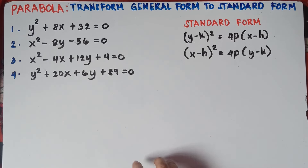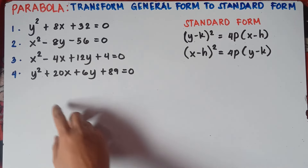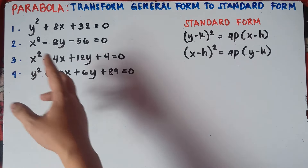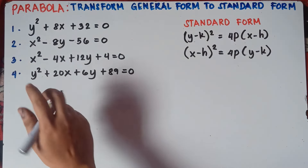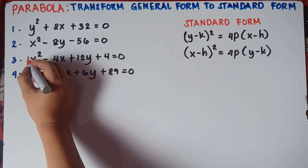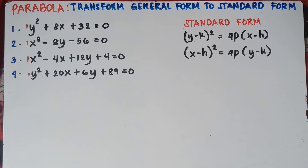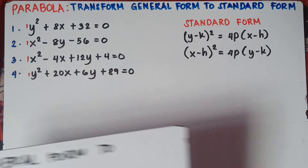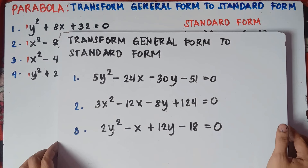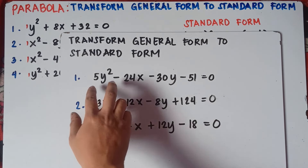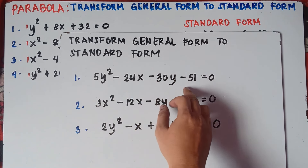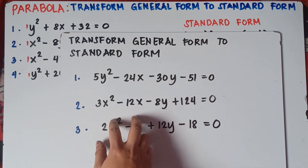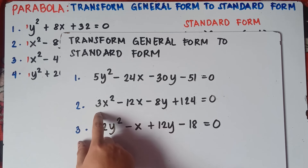This is just Part 1 of our video class, in which the number before y-squared or x-squared is just 1. Understood that any variable — if you don't see any number — is understood to be 1. The numerical coefficient of this given example is just 1. Now the next part of our video class will be quite tricky, since the number before x-squared or y-squared is greater than 1. So we have 5y² minus 24x minus 30y minus 51 equals 0. Same with number 2 — the number before x-squared is greater than 1.